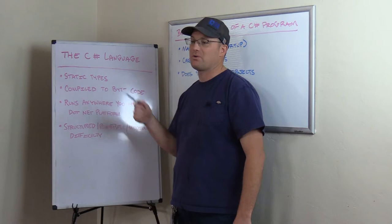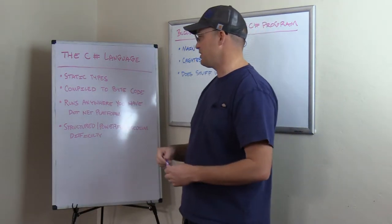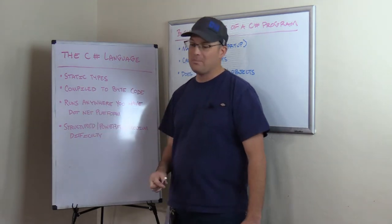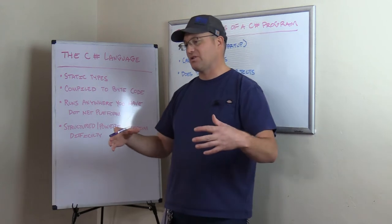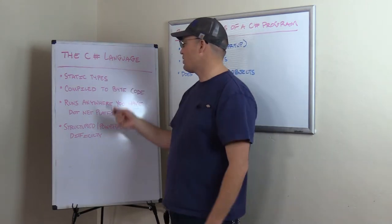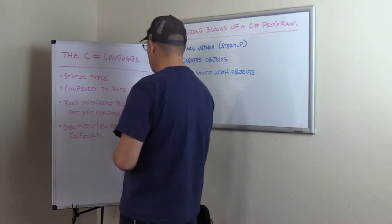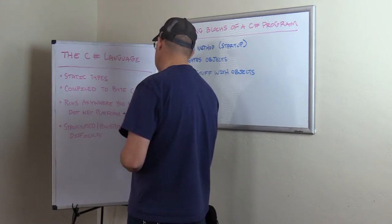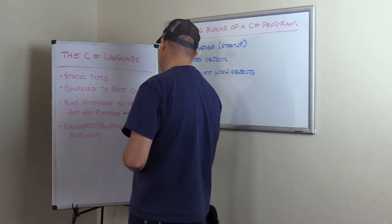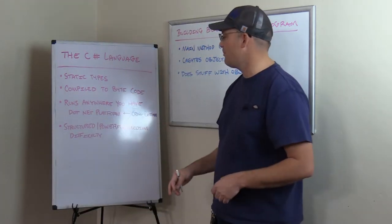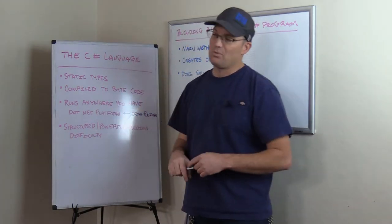C# runs anywhere you have the .NET platform. The .NET platform is a package of tools and software libraries that allow C# programs to run. So C# is what we call cross-platform — it runs on more than one kind of computer architecture. It'll run on Windows computers, Linux computers, and your Android cell phone. Any architecture that somebody builds the .NET platform on, the C# language will run on it, with some caveats.